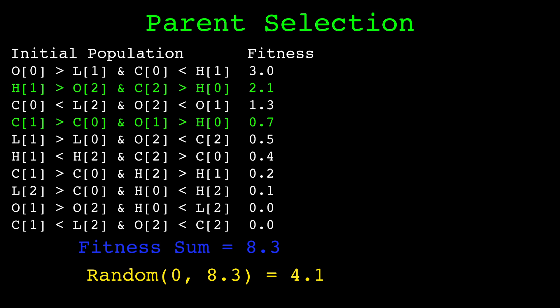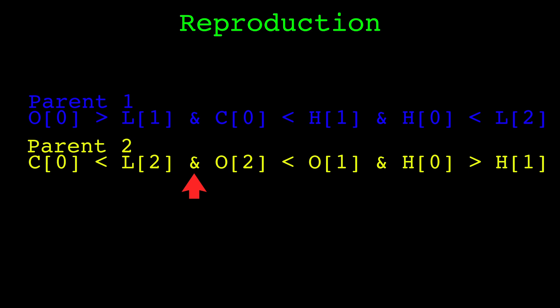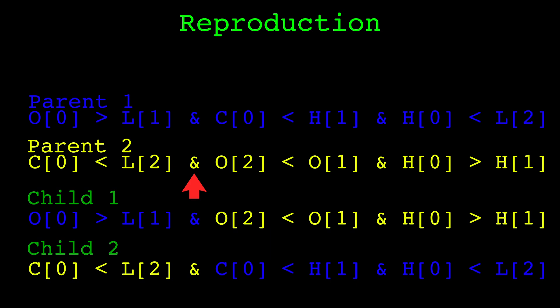Now that we have two parents selected, we can create the children — moving us to the next step, reproduction. Our pattern size here is three, meaning we have three comparison rules. We select a random split point between the comparison rules; with three comparison rules there are two potential split points. The first child takes the comparison rules from the first parent before the split point and from the second parent after the split point. The second child takes the comparison rules from the second parent before the split point and from the first parent after the split point. We repeat this process of parent selection and reproduction until we have filled the next generation's population. This causes comparison rules yielding superior performance to be spread throughout the population, while comparison rules that yield lesser performance are bred out.